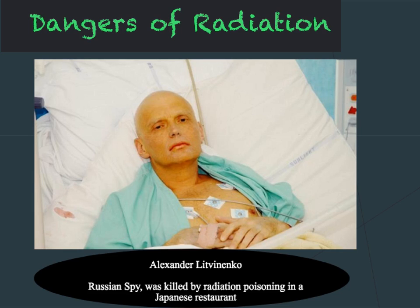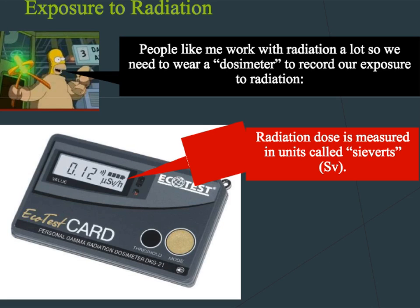In order to protect those that work with radiation we have several pieces of technology to help protect them. People who work with radiation a lot wear something called a dosimeter — here is a dosimeter which records the exposure to radiation. A radiation dose is measured in sieverts; the symbol mu means micro, so this would be in micro sieverts per hour.